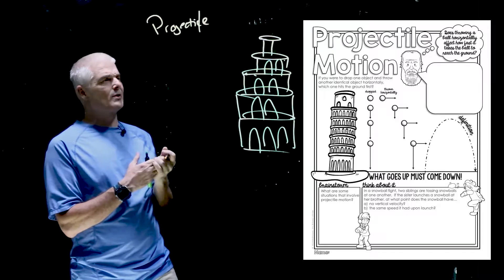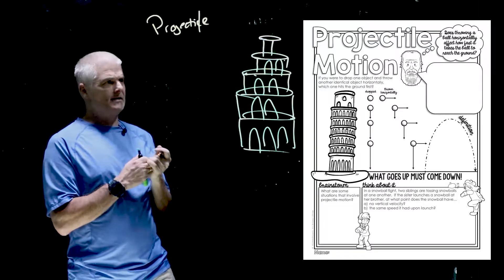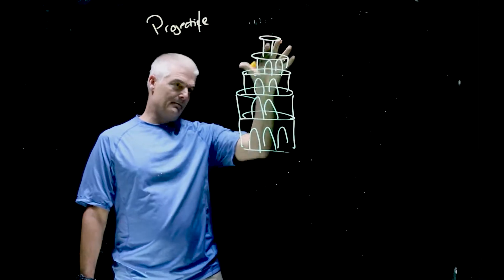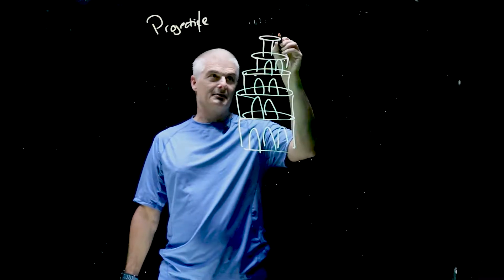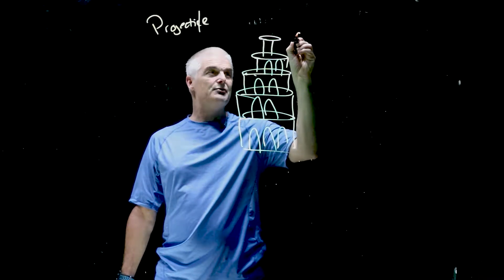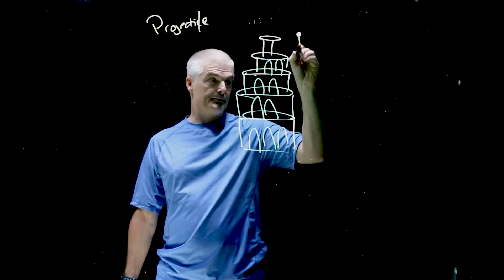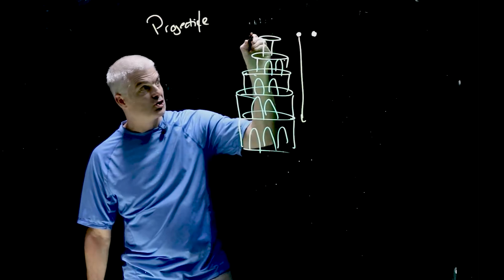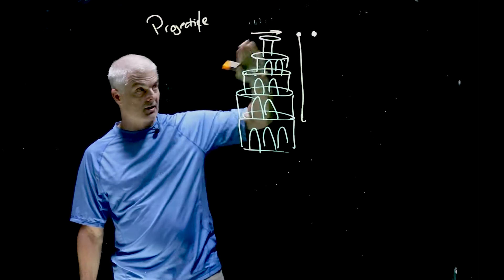But we've got to answer a really important fundamental question. If I've got two objects on the top of a building - this is a building, if you didn't see it, then too bad - one object I'm going to simply drop, and another one I'm going to launch straight, completely horizontal, no arch.